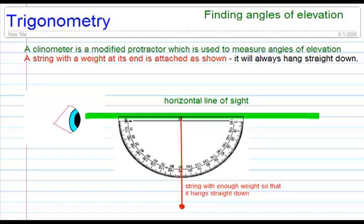It's also helpful to have something similar to a straw or a tube of some sort that you can look through. The understanding is that when you're looking straight ahead along a horizontal line of sight, the string should be hitting the 90 degree angle mark on your protractor.